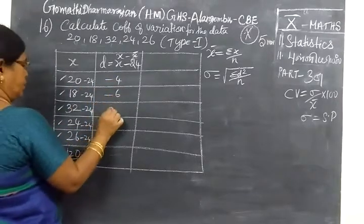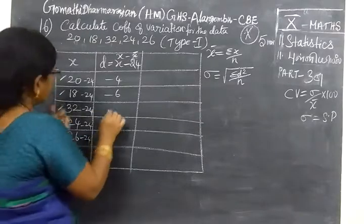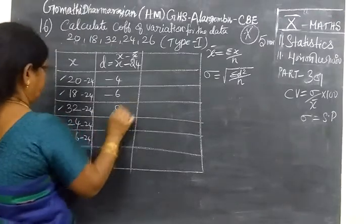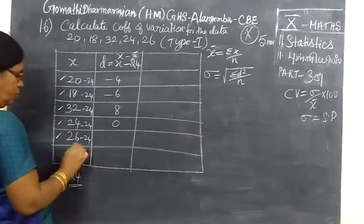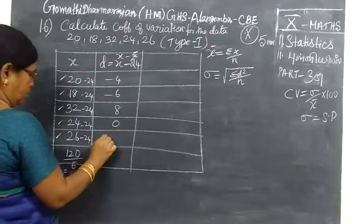Then minus 6. Then 32. 24. 34. 8. Then 0. Then 2.